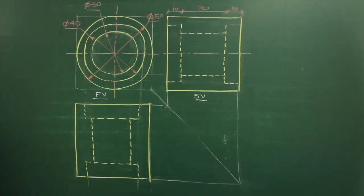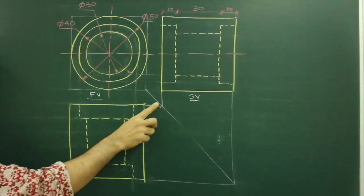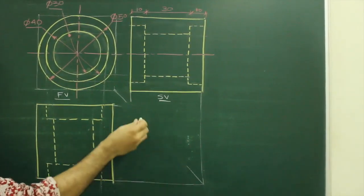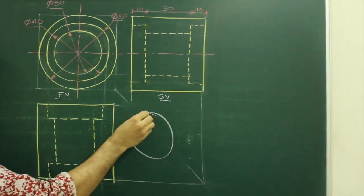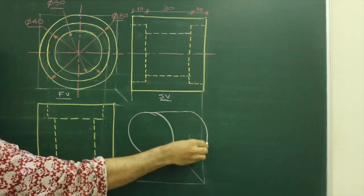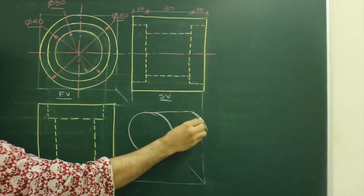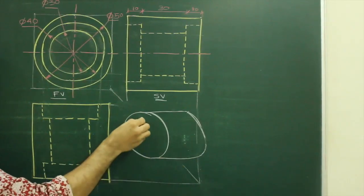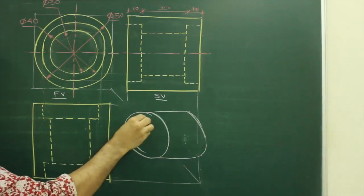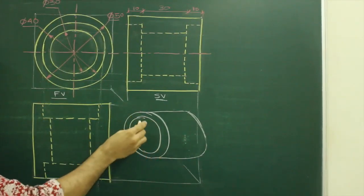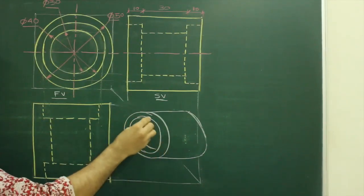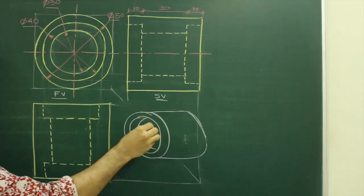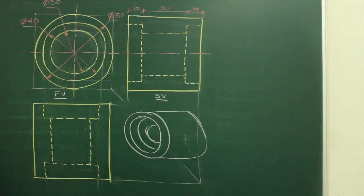See, if you want to see the isometric of this diagram, then this will start from here. This is our circle. Then it is diameter 40. Right? Then we have a depth. And then we have another circle of diameter 30. See this.